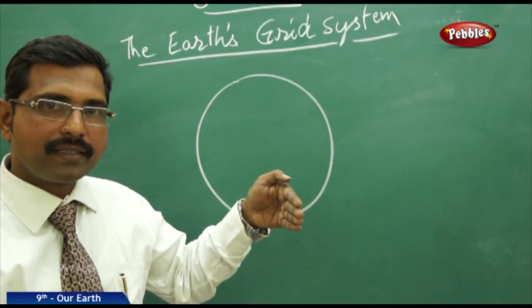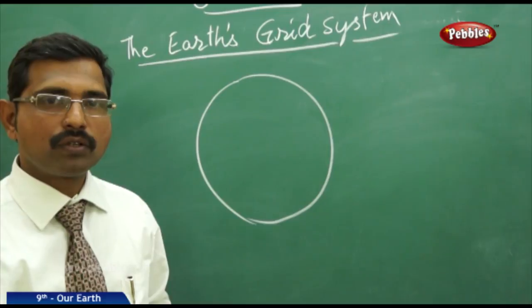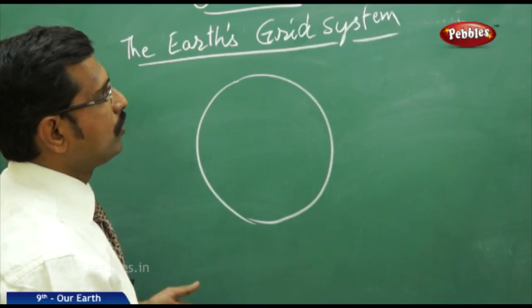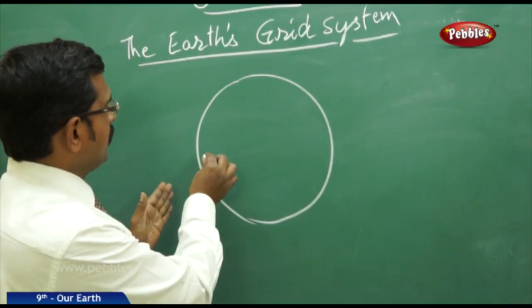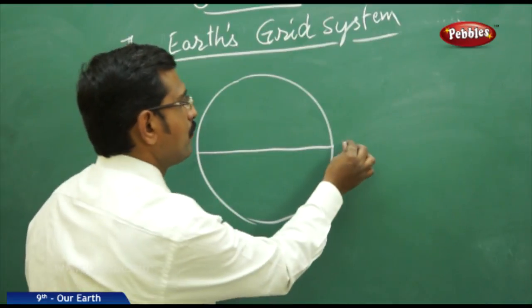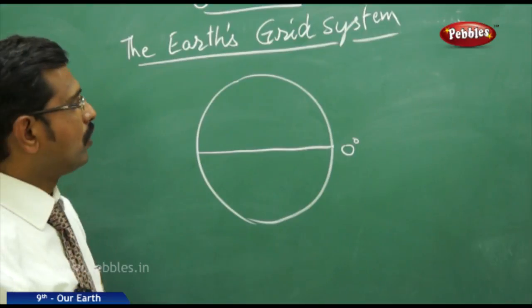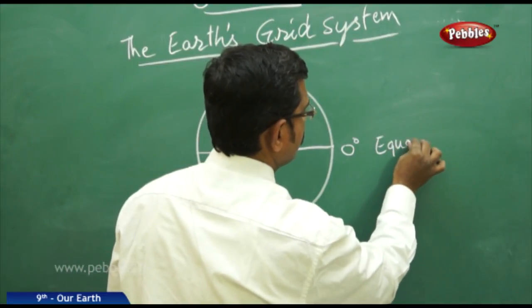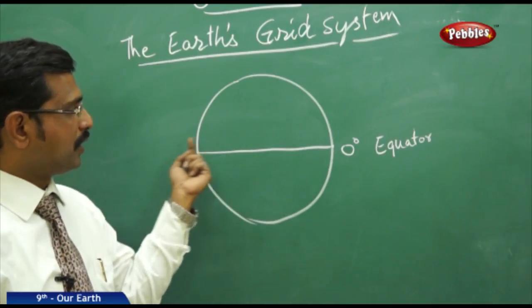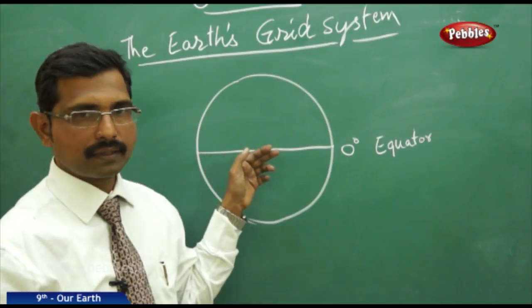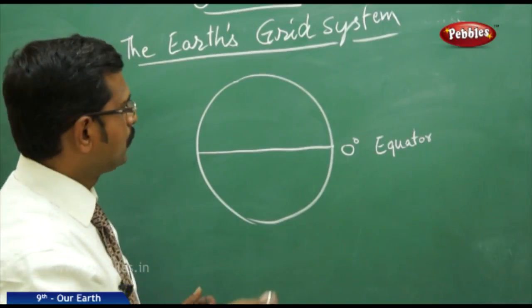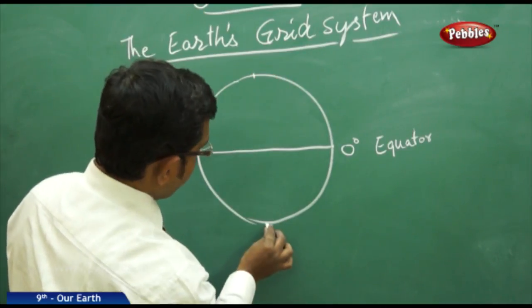Latitudes are imaginary lines passing horizontally, whereas longitudes are imaginary vertical lines. If I draw one line through the center of the Earth, this is the longitude at zero degrees — we call this the equator. The equator is the longest and largest imaginary line passing through the center of the Earth, separating two hemispheres.